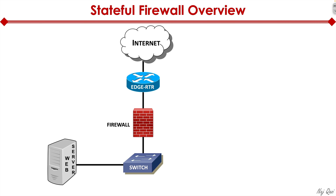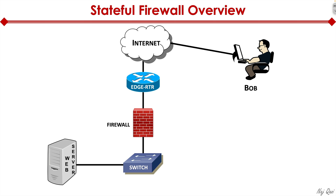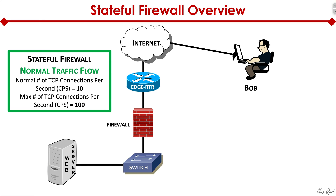Let's quickly look at a stateful firewall overview. We have an internet connection terminating into an internet edge router. That router has a firewall sitting behind it, and behind the firewall we have a switch with a web server plugged into it. We have a legitimate user on the internet named Bob connecting to this web server. The firewall will do stateful inspection, and assuming Bob is sending between 10 to 100 connections per second, that's totally allowed because our firewall policy has those limits defined.